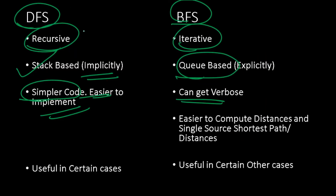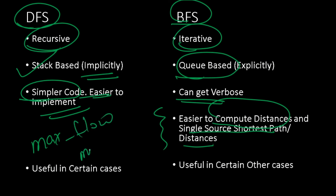BFS has the advantage of easily computing distances and single source shortest path. Both DFS and BFS have their own applications, advantages, and disadvantages. It's best to be familiar with both strategies and not have a preference. For advanced problems like max flow and min cut, you'll start with a DFS strategy using the Ford-Fulkerson algorithm, then eventually implement Dinic's algorithm, which uses a mixture of DFS and BFS. Look for the appropriate tool for the problem and solve it with that tool.